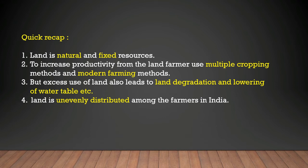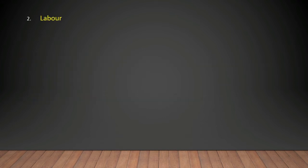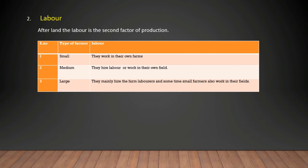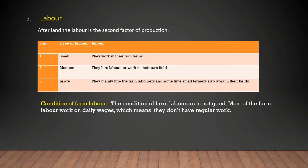Now we proceed to the next factor: labor. After land, labor is the most important factor of production. Small farmers work in their own fields as they don't have enough money to hire labor. Medium farmers, with better economic conditions, sometimes hire labor or work in their own fields. It is large farmers who mainly hire farm labor, and sometimes small farmers also work for them.